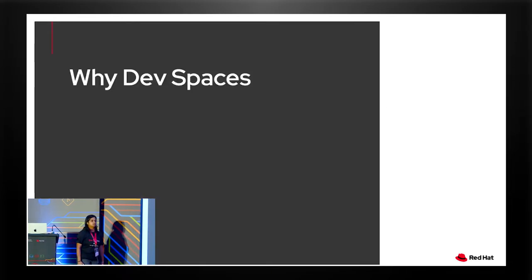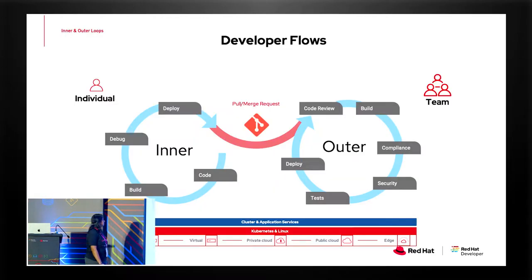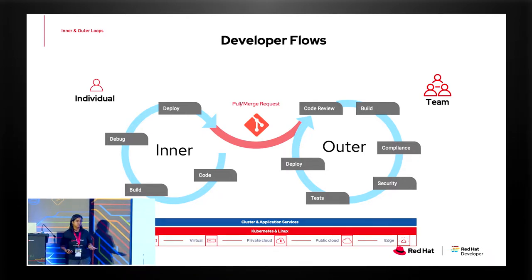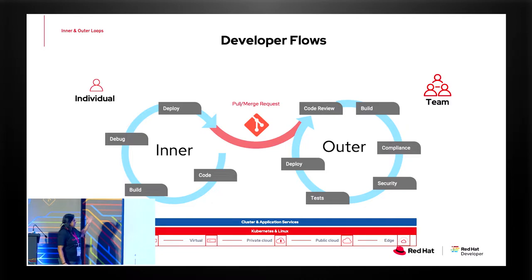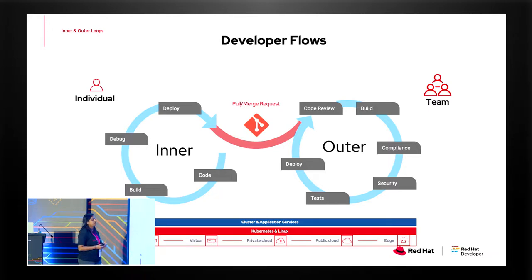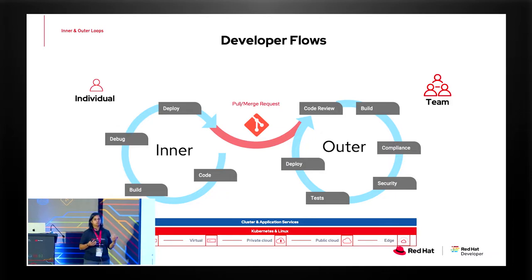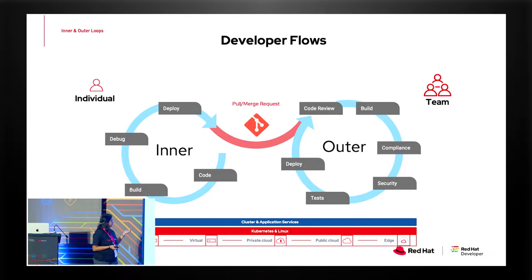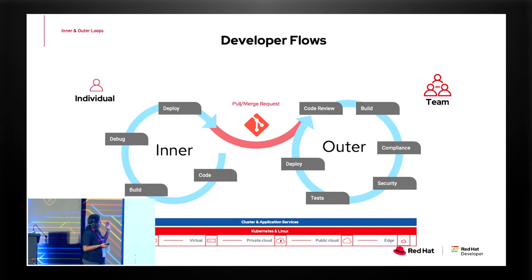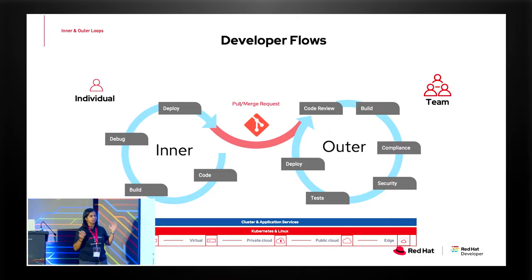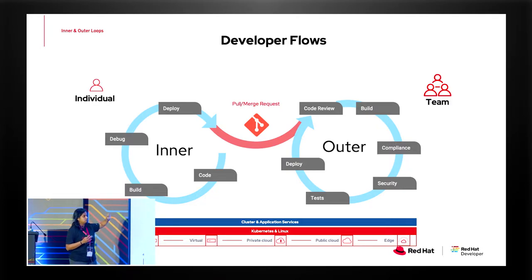So why Dev Spaces? This is the key question I want to answer before going any further. This slide you will see for probably all presentations, but this is how everybody's life is every day. In a developer flow, we have two things: one is the inner loop, the other is the outer loop. The inner loop is where Dev Spaces sits — used by an individual developer every day, where our day-to-day job is to code, build, test, debug, deploy. At some point you push, and then the outer loop kicks in. So Dev Spaces sits here.